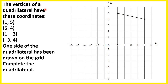The vertices of a quadrilateral have these coordinates. One side has been drawn on the grid — complete the quadrilateral. A quadrilateral is a shape with 4 sides, and the vertices are the corners. The first coordinate is (1, 5) — x coordinate 1, y coordinate 5. Then we have (5, 4) — going up from 5 on the x axis and across from 4 on the y axis. The next coordinate is (1, -3) — x coordinate 1, y coordinate minus 3.